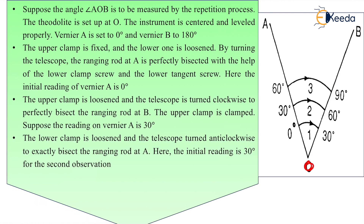The upper clamp screw is fixed and the lower clamp screw is loose. By turning the telescope, the ranging rod at A is bisected, so the readings are fixed. After this, using your lower clamp screw, fix both upper as well as lower clamp screw after bisecting the ranging rod at A. Then we calculate the first set of readings.